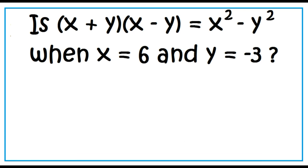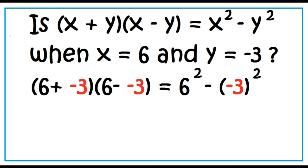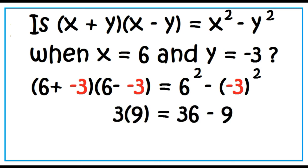Is the quantity x plus y times the quantity x minus y equal to the square of x minus the square of y, when x equals 6 and y equals negative 3? Substitute 6 for x and negative 3 for y, then perform the indicated operations. The result is 27 equals 27. The answer is yes.